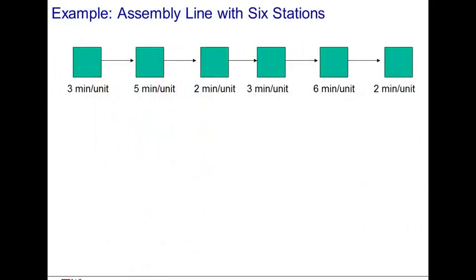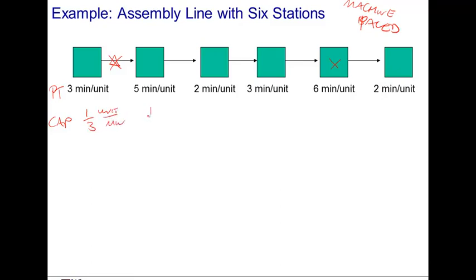To practice our new definitions, consider the following example: a machine-paced line consisting of six workers working in sequence. It is machine-paced because there are no buffers between stations, meaning the six workers must work at exactly the same pace. Though the first station has a shorter activity time and thus excess capacity, it cannot run ahead. The entire process will be paced by the slowest step, which is station number five. The capacities are computed as one over the processing times, expressed in units per minute: one over five, one over two, one over three, one over six, one over two.